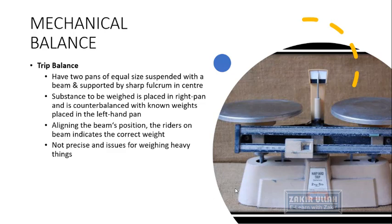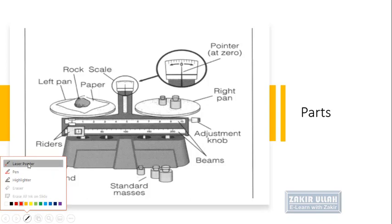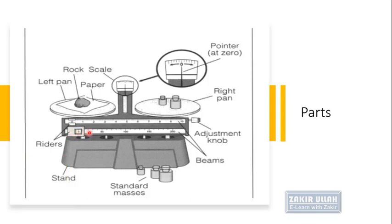The trip balance also has issues with weighing heavy things; it is best used for objects of small size. These are the limitations of the trip balance. Looking at the parts of the trip balance, we can see the left pan and the right pan, with the fulcrum and scale in the center. The beams give us the reading — the lower one gives us the tens or hundreds.